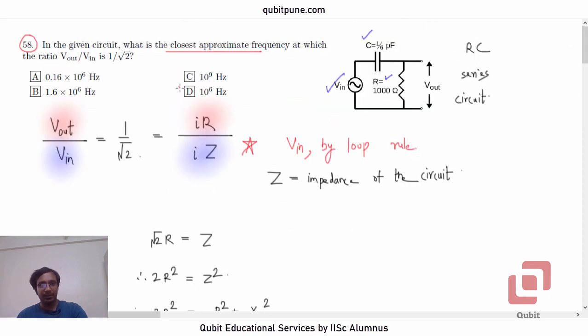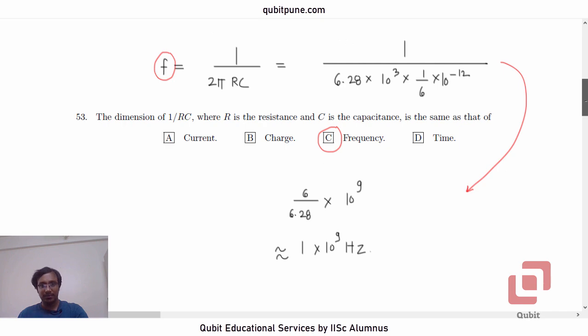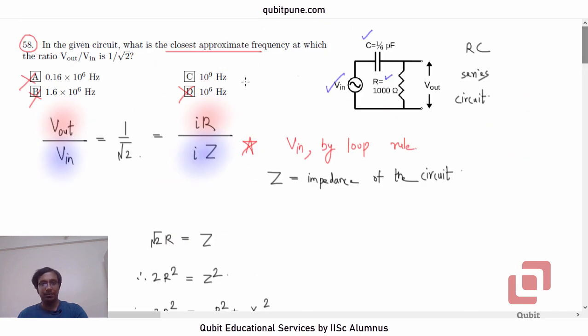Clearly, D is not right. And so are A and B because there the power is very small, 10 raised to 6. So, the correct option has to be 10 raised to 9 hertz, that is C.